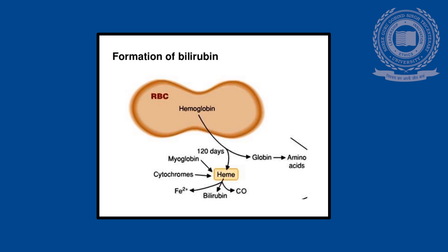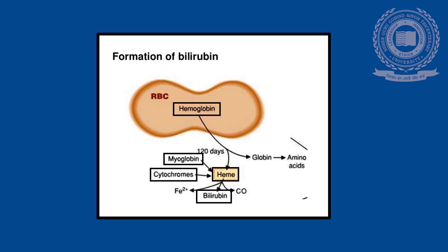Let us discuss formation of bilirubin. Bilirubin is formed from heme. The major source of heme is hemoglobin present inside the cytoplasm of RBCs or red blood corpuscles. A small amount of heme is also contributed from myoglobin and cytochromes.